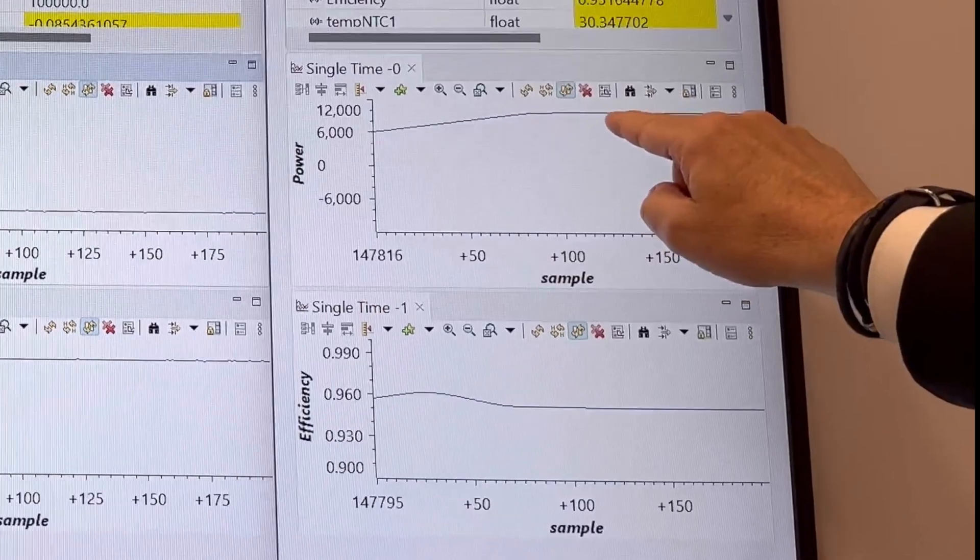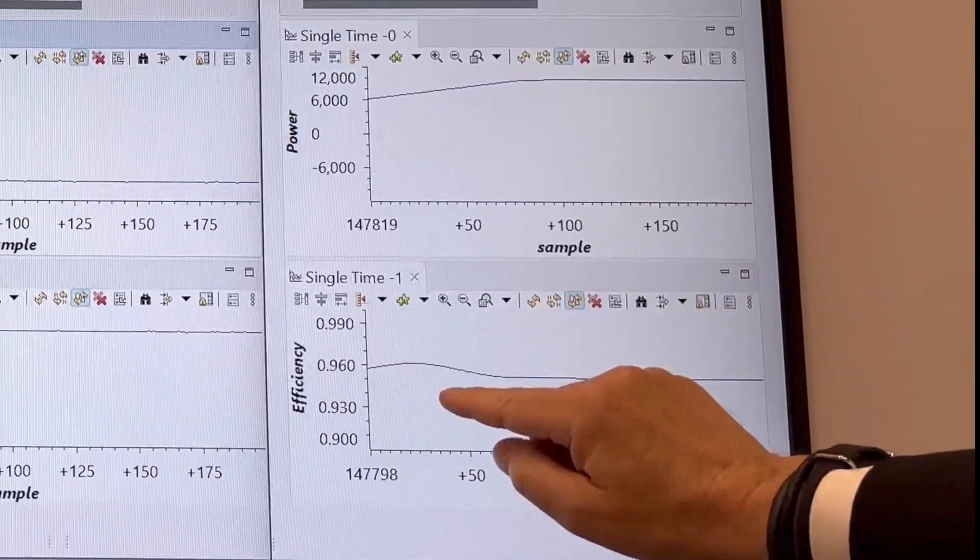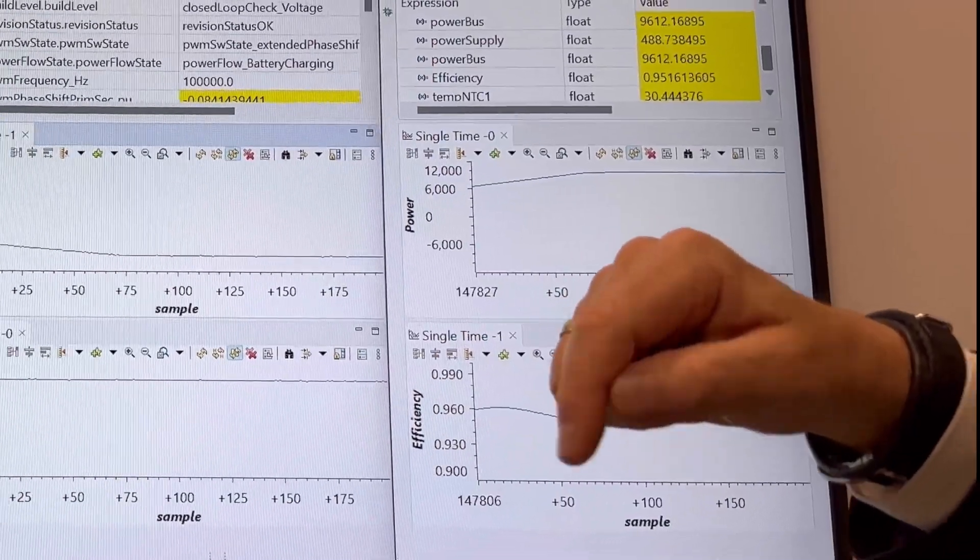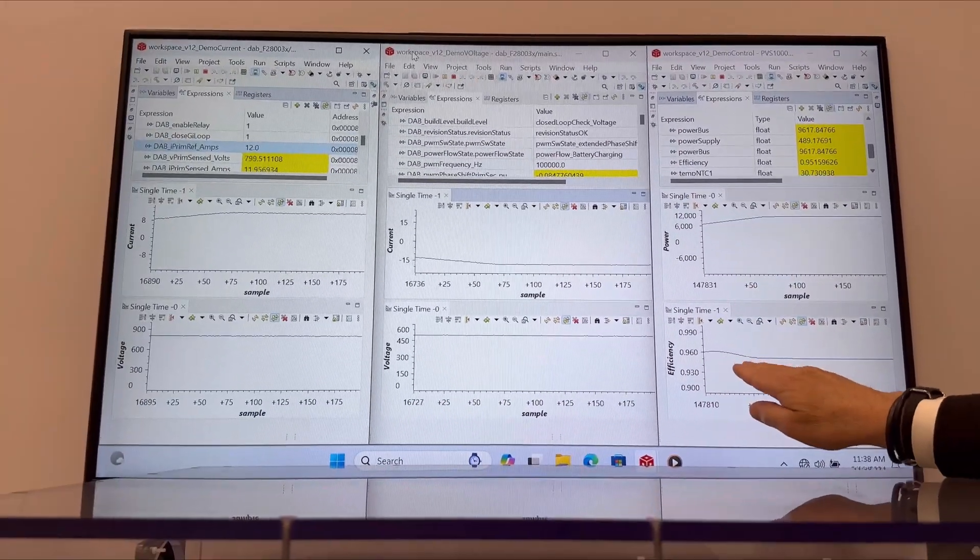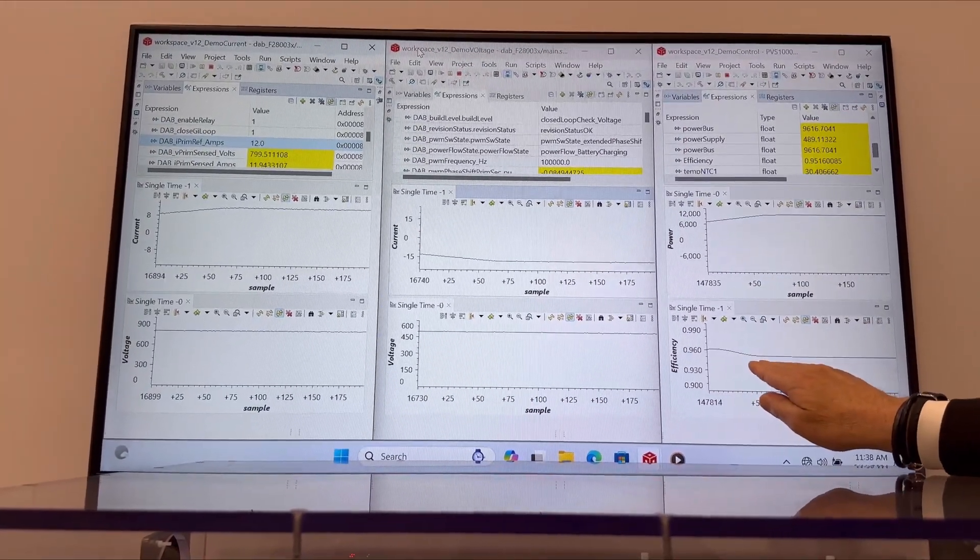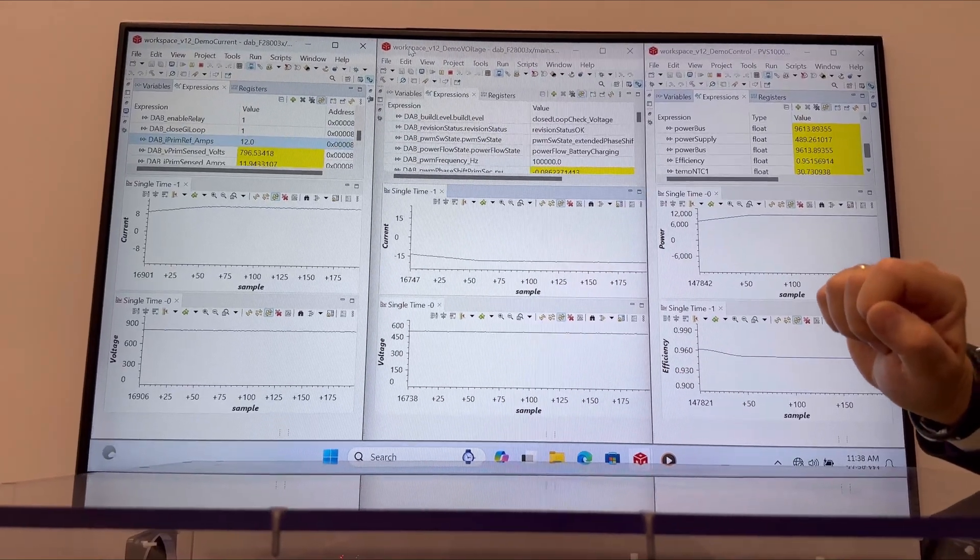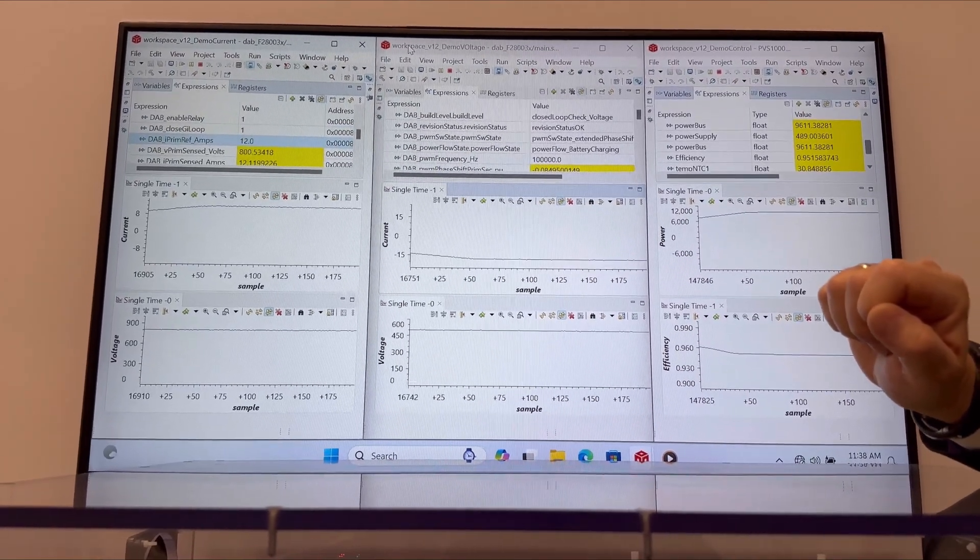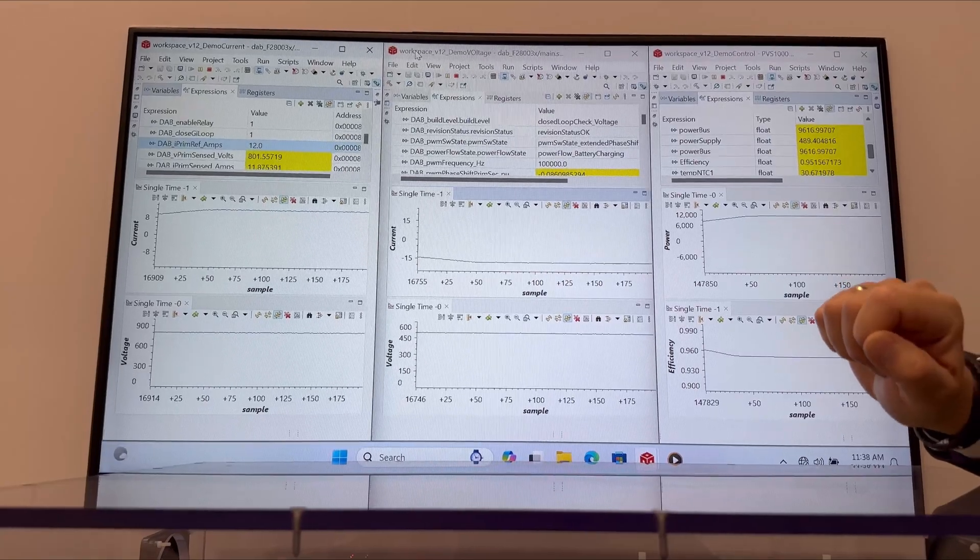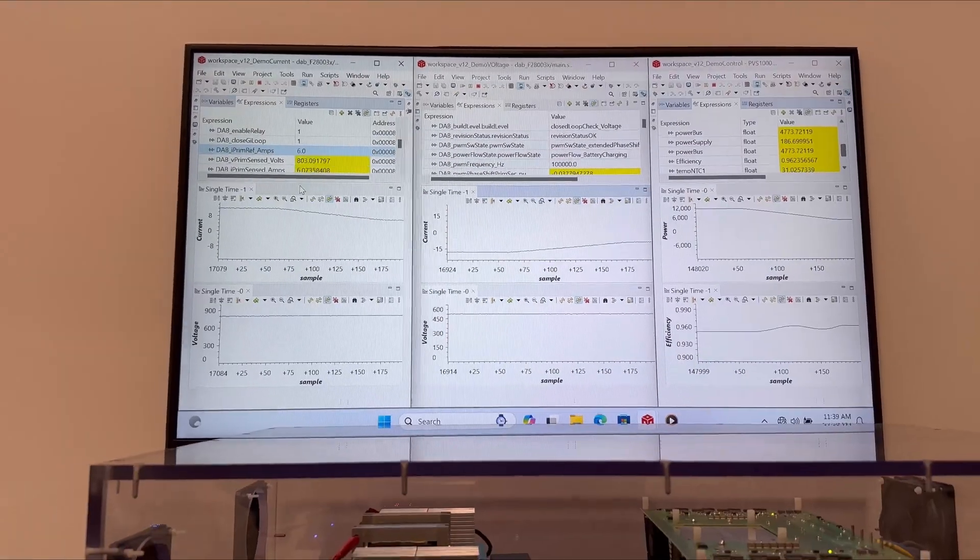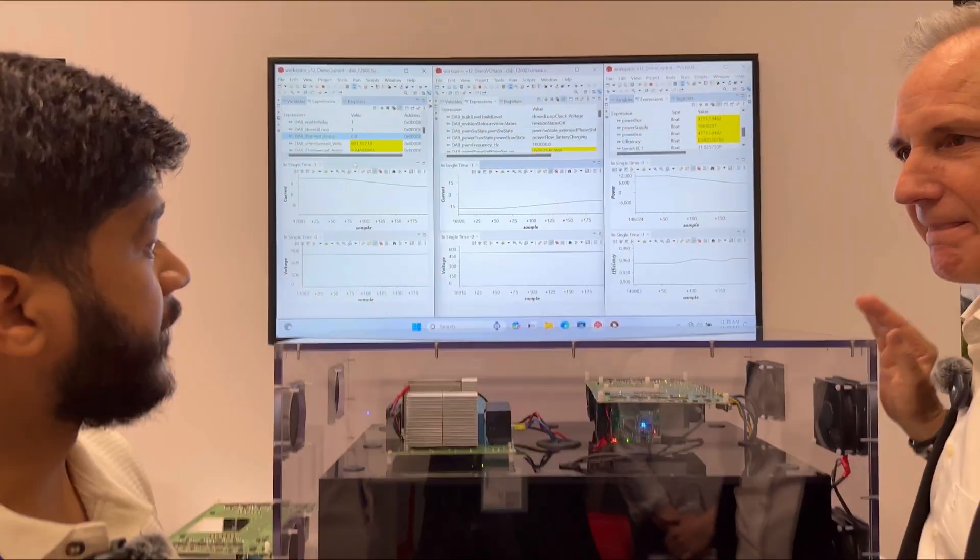Here you see actually the efficiency for both converters. It's combined, 96 percent for both converters. So each one is running at 98 percent efficiency, which is very, very high for such a high load actually.